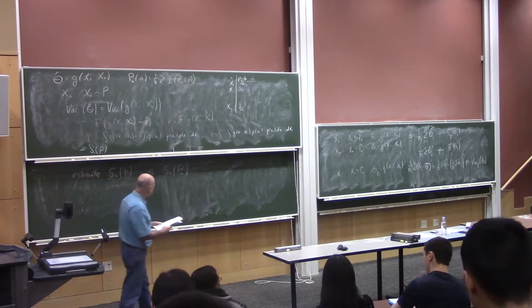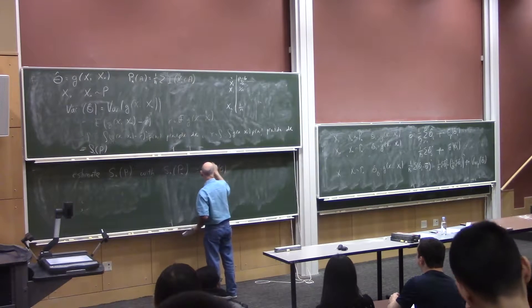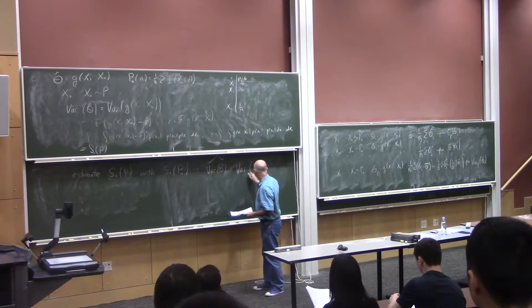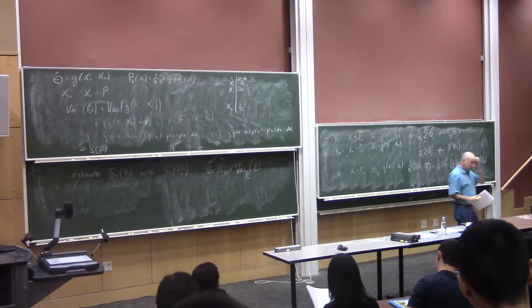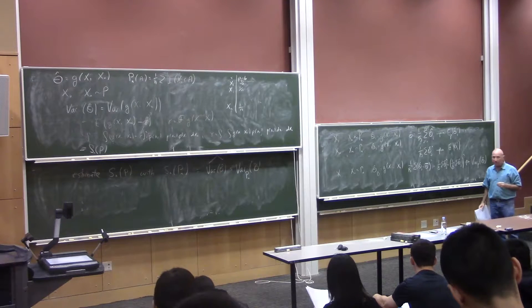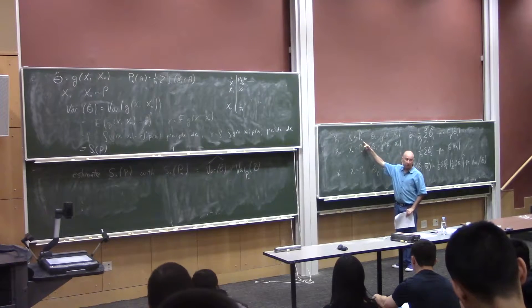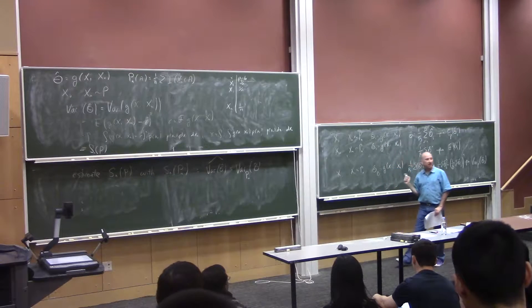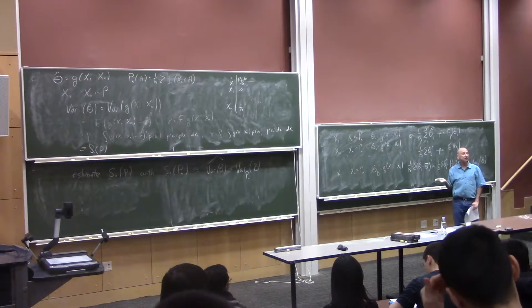That's called the bootstrap estimate of the variance — we denote it with a hat on the variance, or as the variance of theta-hat computed under p_n instead of p. To implement this: draw n observations from p_n, compute your statistic (say the median), repeat 10,000 times, get 10,000 medians, take the variance. That's it — very simple.